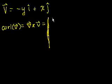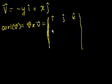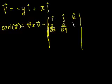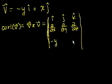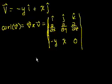So when you take the cross product, you still have to do it in three dimensions. Set up i, j, k with partial with respect to x, partial with respect to y, partial with respect to z. The x component is minus y, the j component is x, and we have no k component. This should be a little bit cleaner to calculate than the last example.